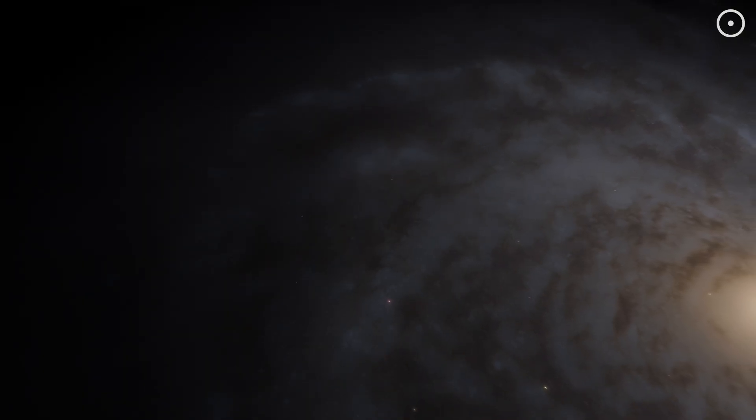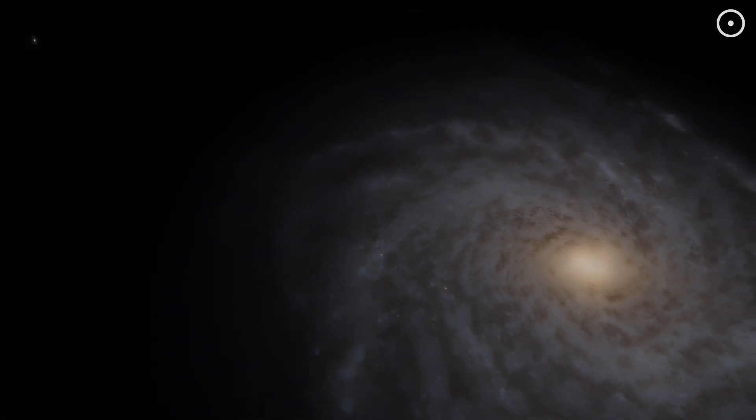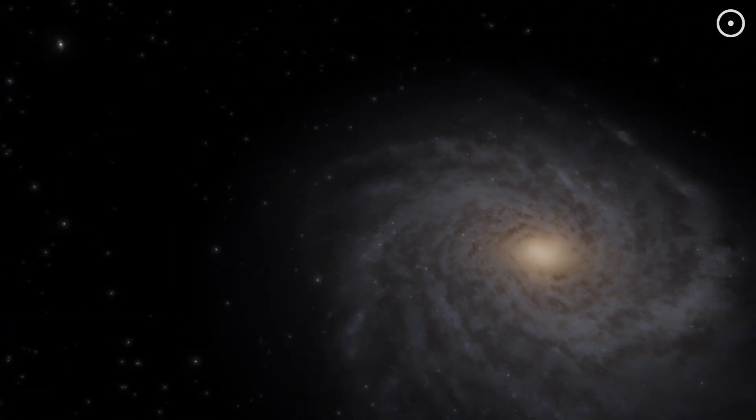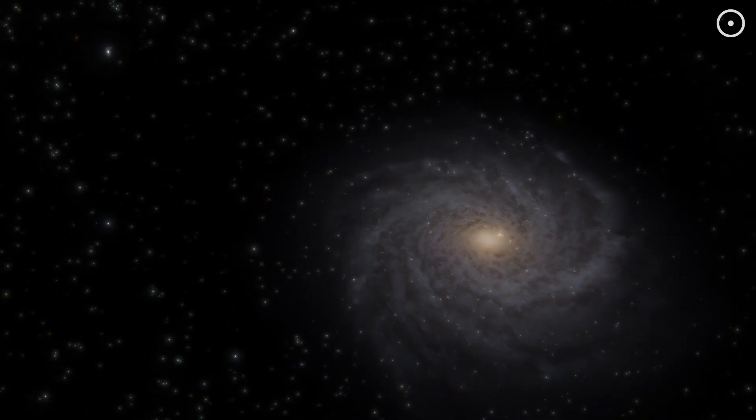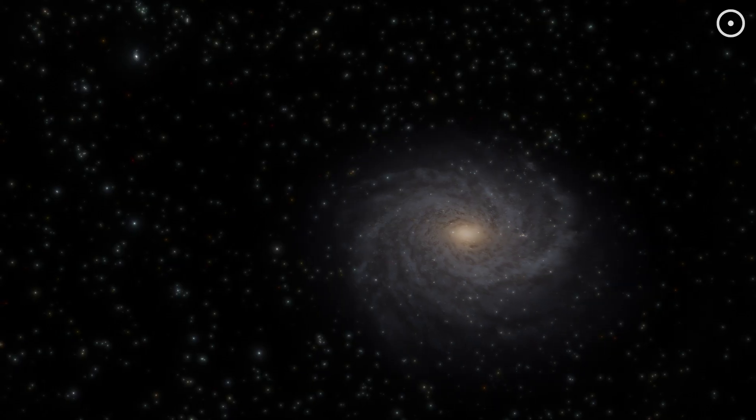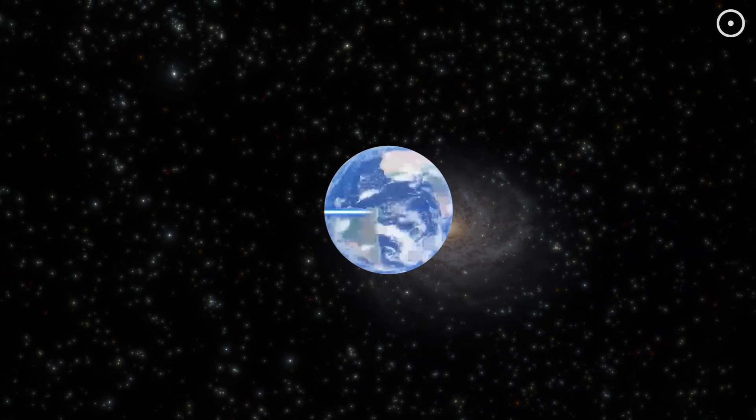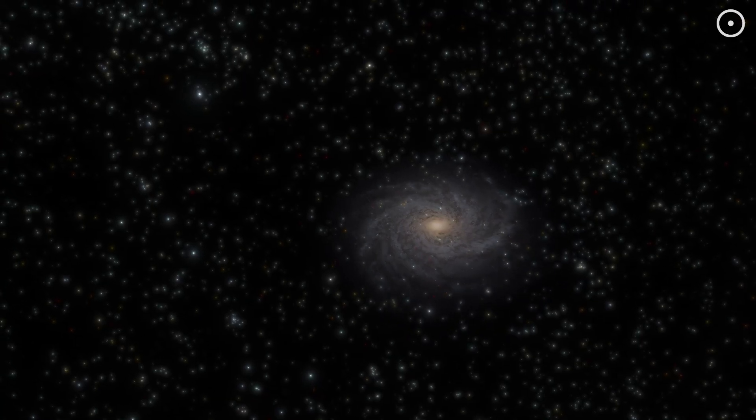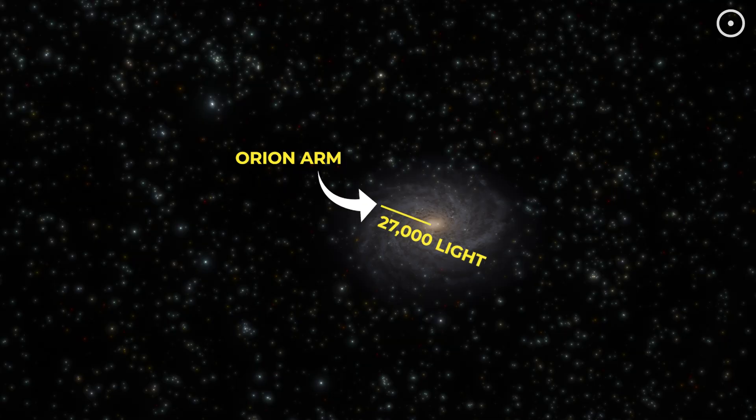Zoom out further and our entire solar system becomes invisible in the vast spiral arms of the Milky Way. We're talking about a galaxy so massive that if our solar system was the size of a quarter, the Milky Way would stretch around the circumference of the Earth about 63 times. We're not even in the fancy part of town, just hanging out in a decent neighborhood called the Orion Arm, about 27,000 light years from the galactic center.